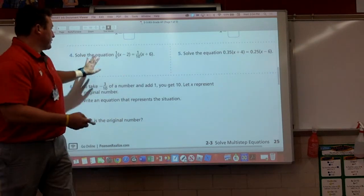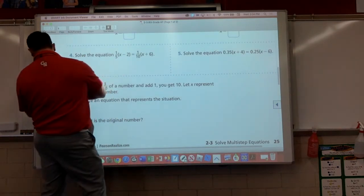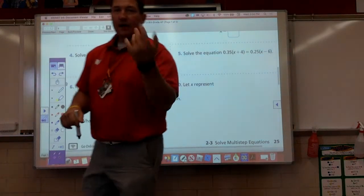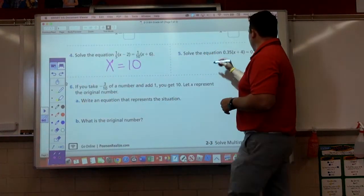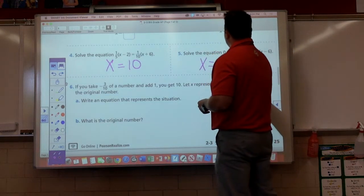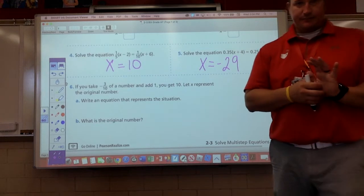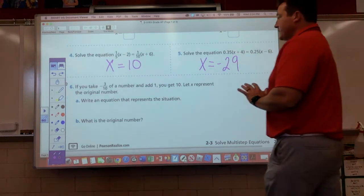I'm going to go ahead and give you the answers on these two. Let's see. So, number four, x is equal to 10. Number five, we should get a negative number on here. I believe it should be negative 29. Nice. All right.